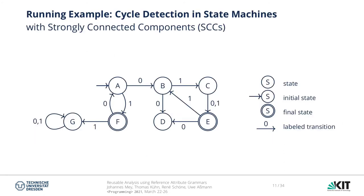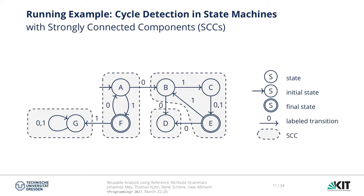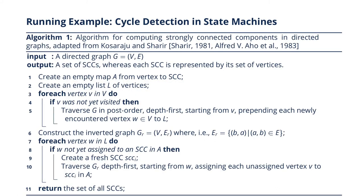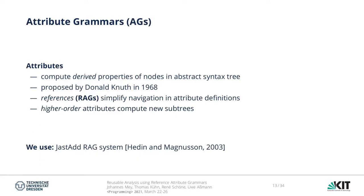We will illustrate the process with the component analysis example shown previously. Remember, there is a state machine DSL and we want to find cycles by computing strongly connected components. The algorithm to compute SCCs is taken from the literature. The principal idea is to traverse the tree and construct a list of vertices, and then take each vertex in this list as a starting point of an inverted traversal, constructing the SCCs during the process. What is important is the notion of attribute grammars we are using, which will be presented now.